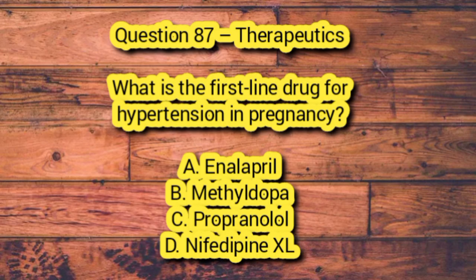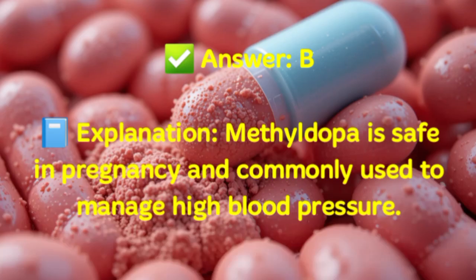Question 87 – Therapeutics. What is the first-line drug for hypertension in pregnancy? A. Enalapril. B. Methyldopa. C. Propranolol. D. Nifedipine XL. Answer: B. Explanation: Methyldopa is safe in pregnancy and commonly used to manage high blood pressure.